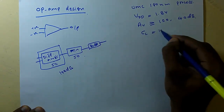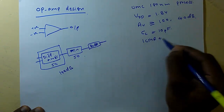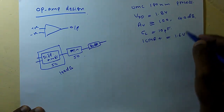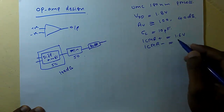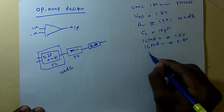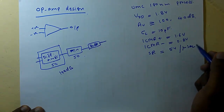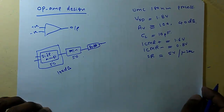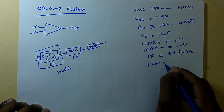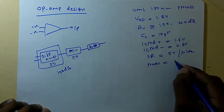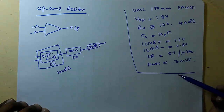The load capacitor is 10 picofarads. The maximum input common mode range is 1.6 volts, and the minimum common mode range is 0.8 volts. The slew rate is 5 volts per microsecond. Power dissipation should be less than 0.3 milliwatts. We are going to design a differential amplifier that meets all these requirements.